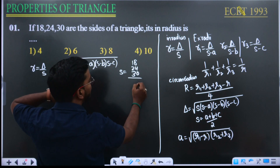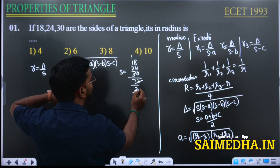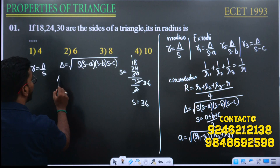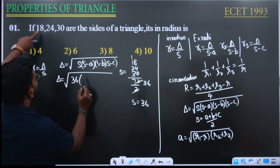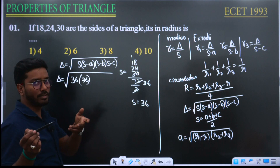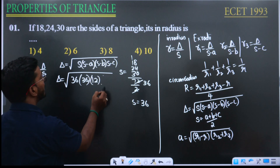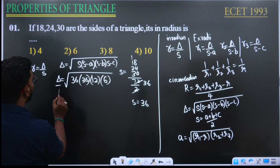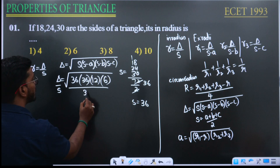With a equals 18, b equals 24, c equals 30: s equals (18 plus 24 plus 30) divided by 2 equals 72 divided by 2 equals 36. So delta equals root of 36 times (36 minus 18) times (36 minus 24) times (36 minus 30), which gives root of 36 times 18 times 12 times 6.